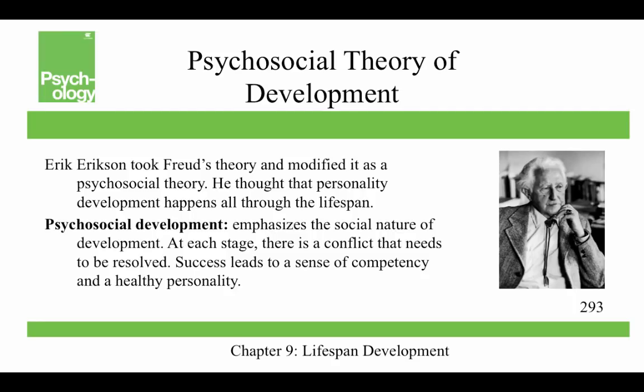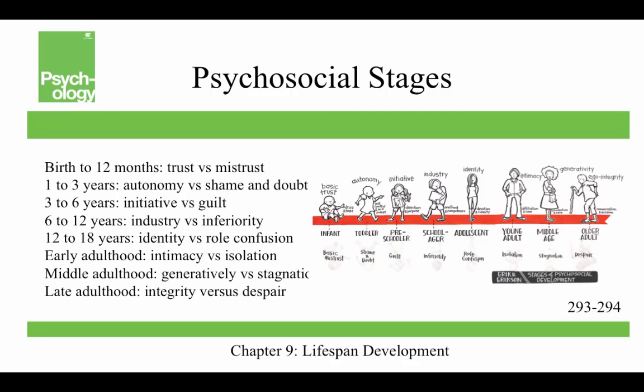Erik Erikson took Freud's theory and modified it as a psychosocial theory, believing that personality development occurs throughout the lifespan. Freud's daughter Anna actually dismissed him, saying Erikson had rewritten Freud for American college students. He emphasized the social nature of development, and at each stage there is a conflict that needs to be resolved — success leads to a sense of competency and a healthy personality, while failure leads to feelings of inadequacy.